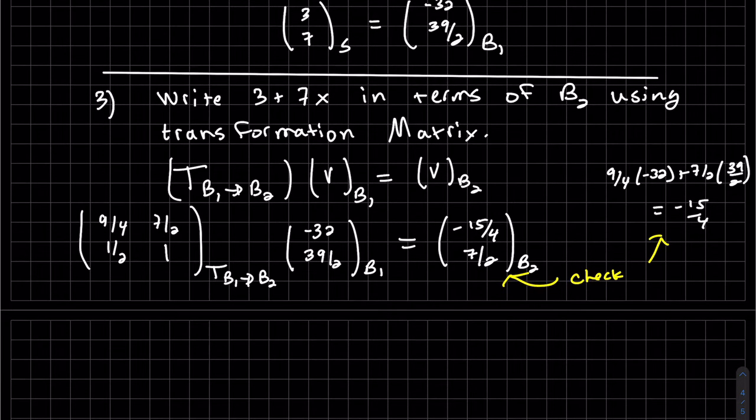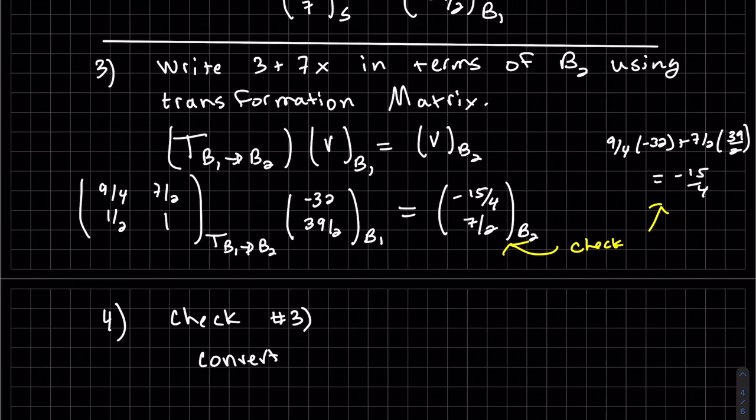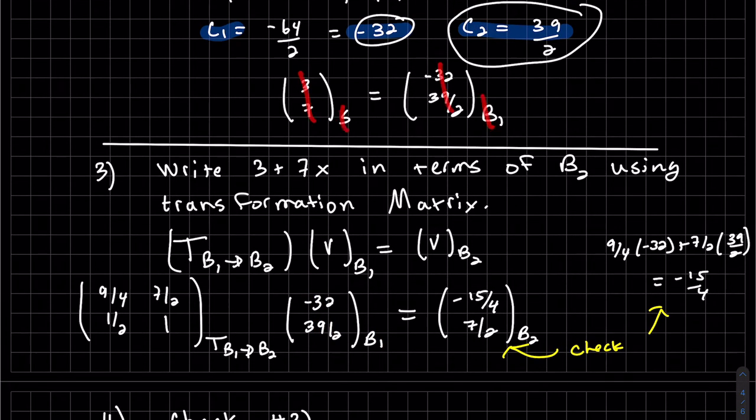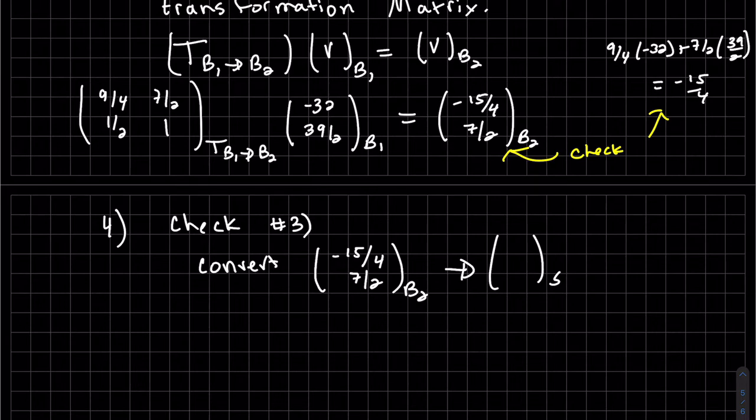Now our last problem, number four, is check number three. So a couple ways we can do this, but I think the way I'm going to choose is I'm going to see if this, if I want to convert, I want to convert it to standard. We already know this converted to standard is 3, 7. We just did that work. This will make us go full circle.